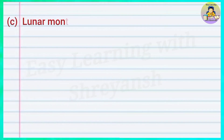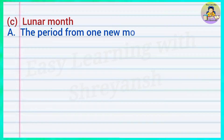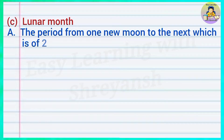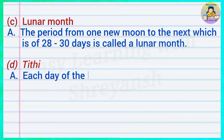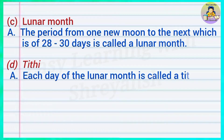C — lunar month: The period from one new moon to the next, which is of 28 to 30 days, is called a lunar month. D — tithi: Each day of the lunar month is called a tithi.